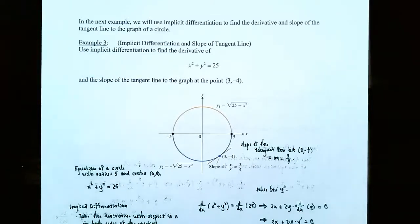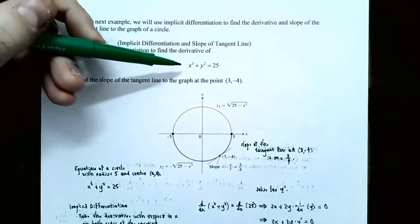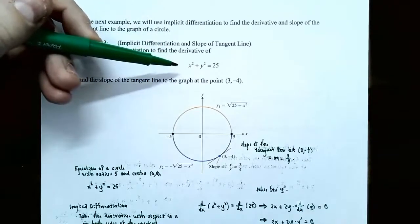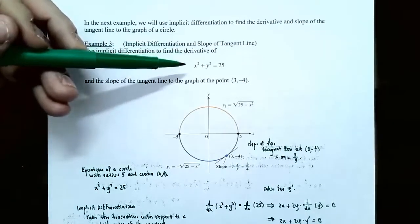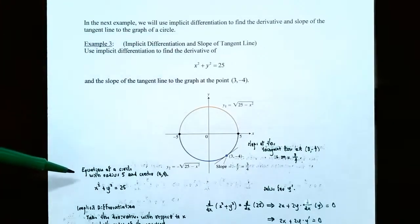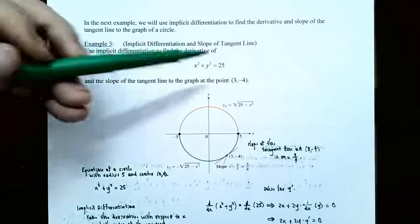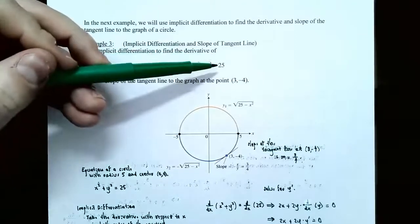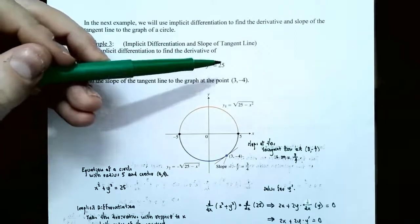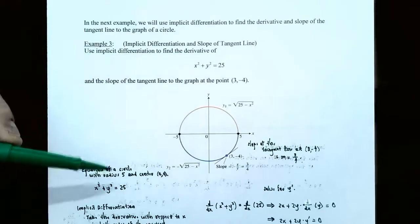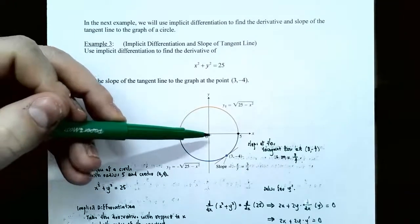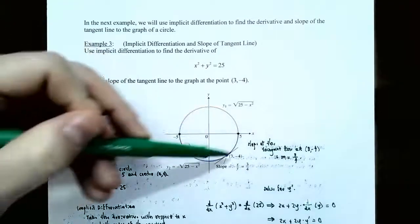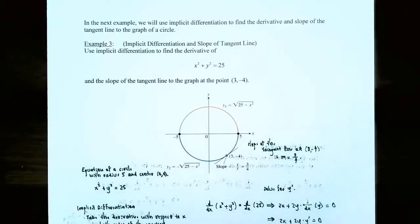The reason why we need to use implicit differentiation is because this is an implicit equation — notice that the equation is not solved for y. The equation x squared plus y squared equals 25 is actually the equation of a circle with a radius of 5, because the right side of the equation is the radius squared. So the radius is 5, the center of the circle is at the origin (0, 0), and you have a distance of 5 all the way around the origin making up the circle.